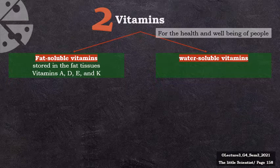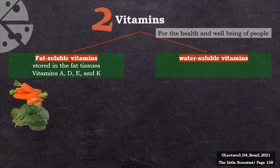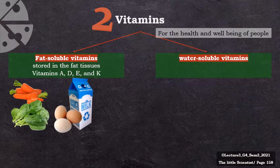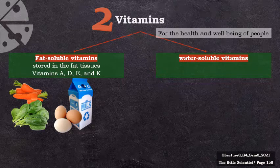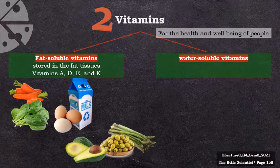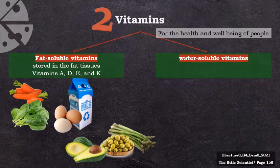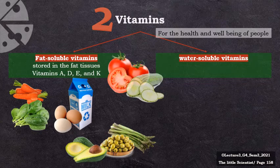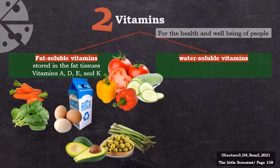You can find vitamin A, which helps you see at night, in carrots and spinach. Milk and eggs are rich in vitamin D that helps your bones and teeth. Asparagus, olives, and avocado are rich in vitamin E. And you can find vitamin K in tomatoes, cucumbers, and peppers.